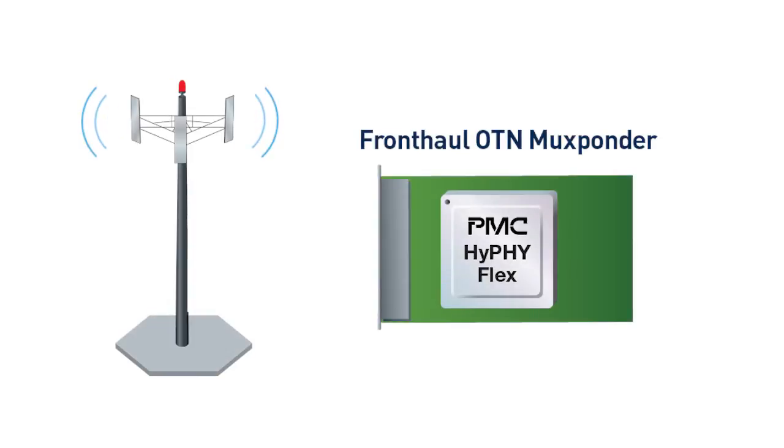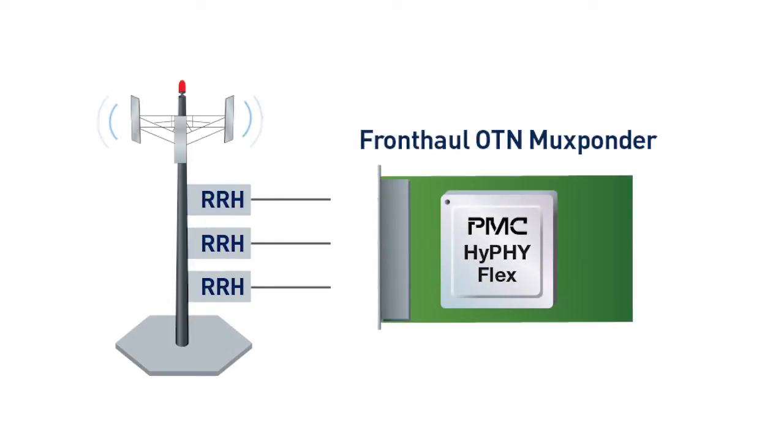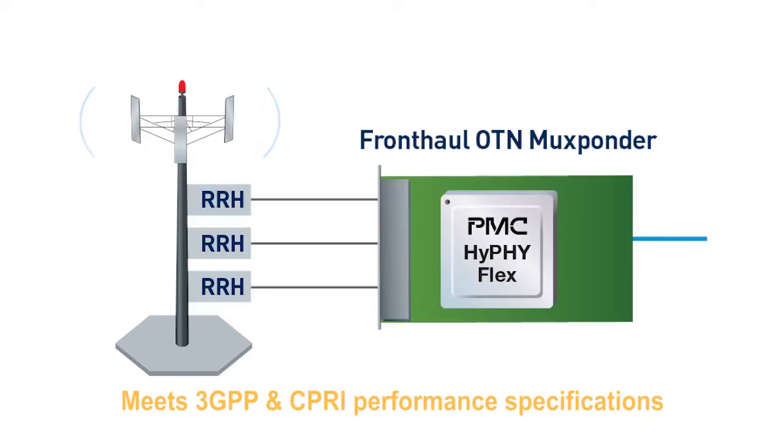To keep pace with the explosive growth of mobile data and video, mobile network operators around the world are looking at how to evolve to a CRAN, or centralized radio access network, architecture. However, a significant challenge has been a lack of available solutions that enable a cost-effective and carrier-grade fronthaul network, but PMC is changing that. With our breakthrough OTN-based mobile fronthaul solution, operators will benefit from the carrier-grade features that OTN enables while meeting the most rigid 3GPP and CPRI performance specs.